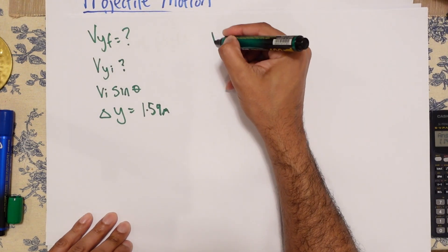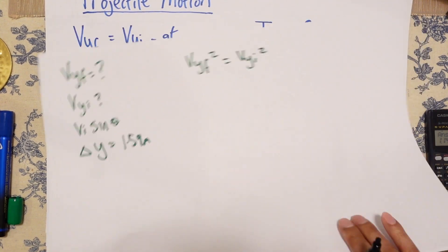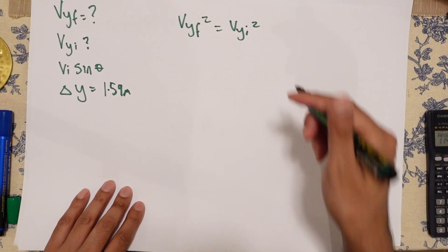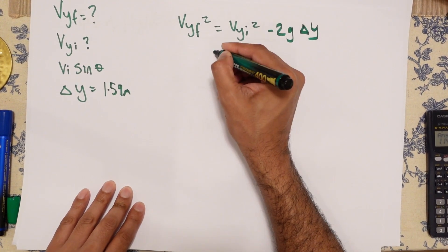So VYF squared equals VYI squared minus 2G delta Y.